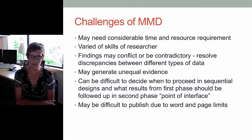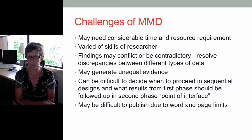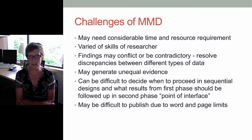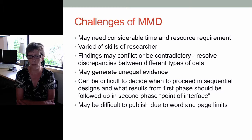There are challenges with mixed methods design. It may take considerable time and resources. It may take more personnel. The researcher's skills need to be varied, or there needs to be a research team with skills in both quantitative and qualitative design. Findings may conflict or be contradictory, and there's a need to resolve discrepancies between different types of data. It may generate unequal evidence where one is more prominent than the other. It can also be difficult to decide when to proceed in a sequential design — what results from the first phase should be followed up in the second phase, known as the point of interface. It may also be difficult to publish due to word and page limits, as combining both sets of results can lead to a fairly extensive manuscript.